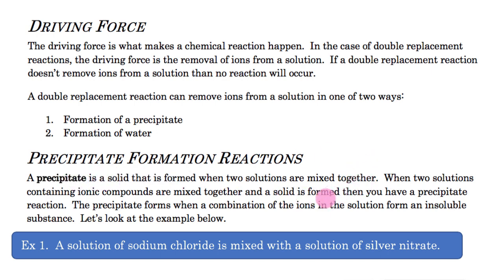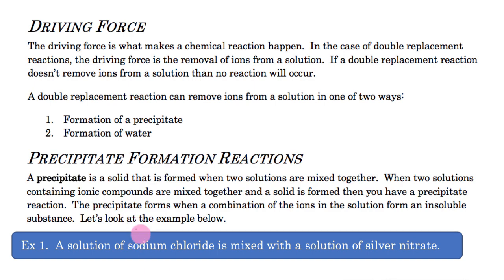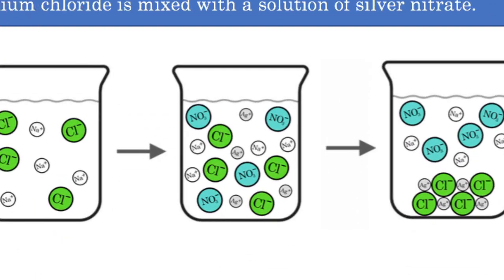When a precipitate forms, those ions are no longer free to move around in the solution. When we form water, those ions are also no longer free to move around. So whenever ions are removed from solution, a double replacement reaction takes place. Here's the reaction we're looking at: a solution of sodium chloride mixed with a solution of silver nitrate.